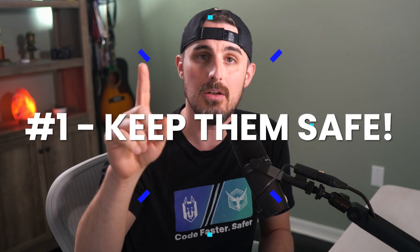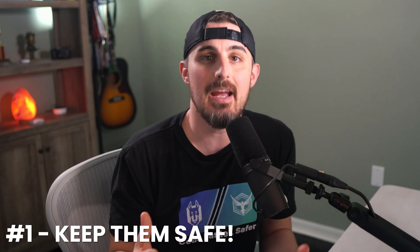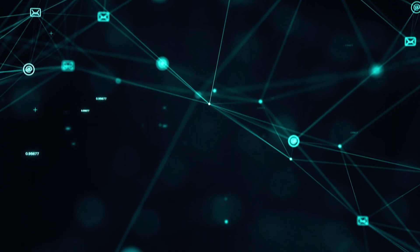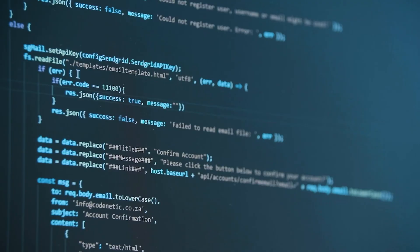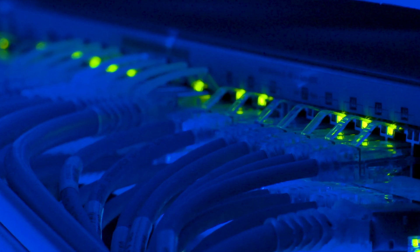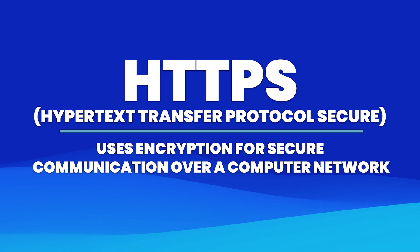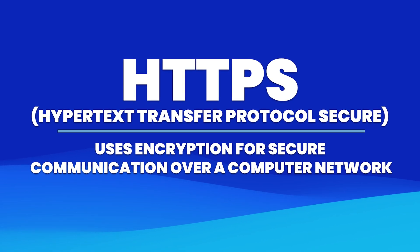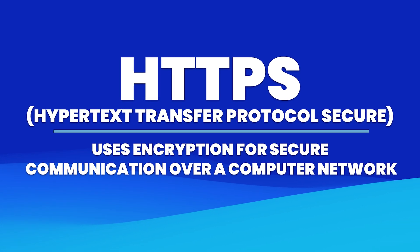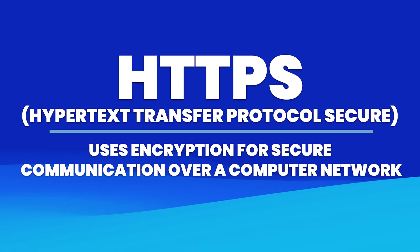Number one: you want to keep them safe. What does that entail? When you're transmitting a JWT over the wire, over the network, you want to use a secure connection. Using the HTTPS protocol is crucial to ensure that it can't be read by a malicious actor over the wire.